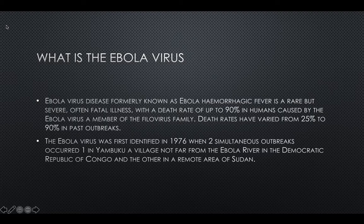The Ebola virus was first identified in 1976 when two simultaneous outbreaks occurred — one in Yambuku, a village not far from the Ebola River in the Democratic Republic of Congo, and the other in a remote area of Sudan.